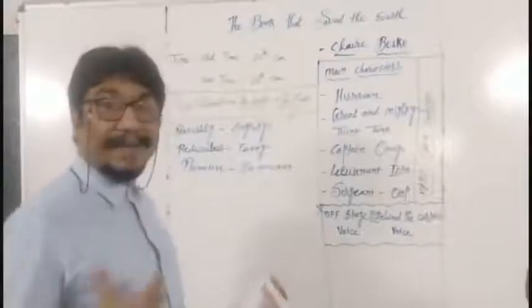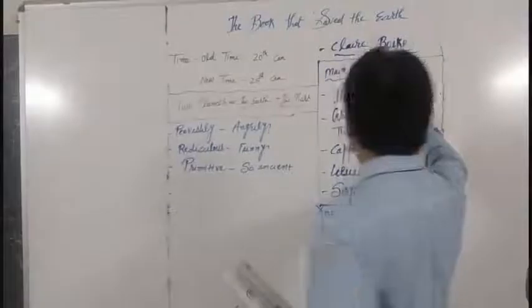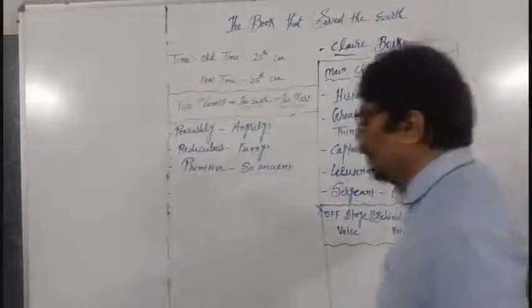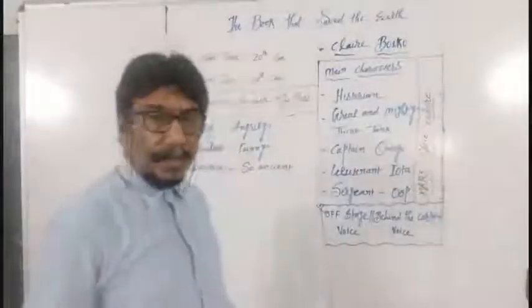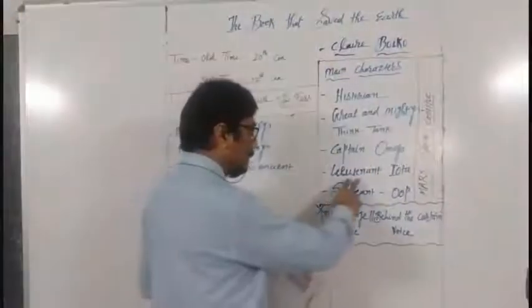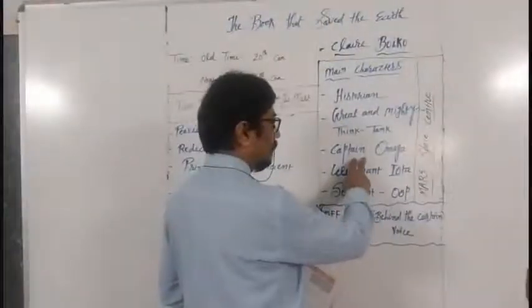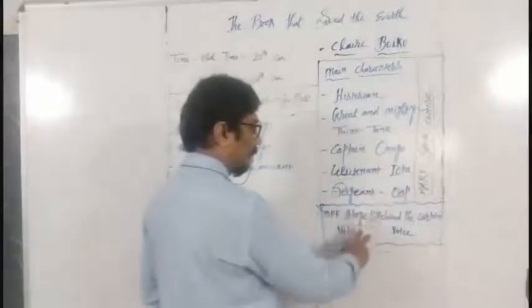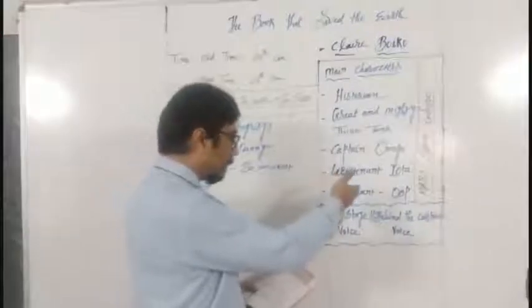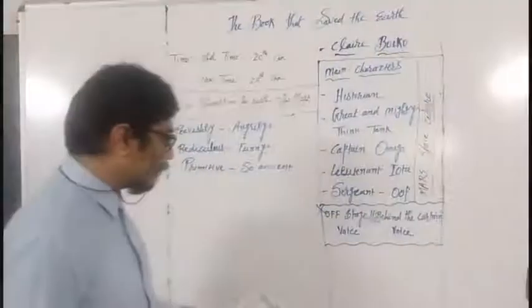Few characters are there. First of all, the Historian explains the history. Next to that one is great and mighty Think-Tank. He is mighty, powerful, strong, stout, and his name indicates that he is the man of intellect. Next is Lieutenant Iota, spelling is different, pronunciation is different. Then Captain Omega, Sergeant Oop. These two are she, these two are he.